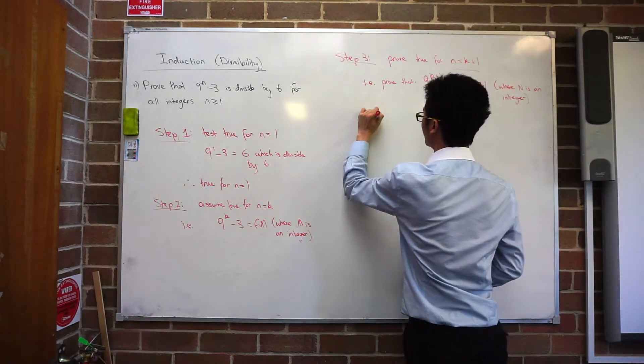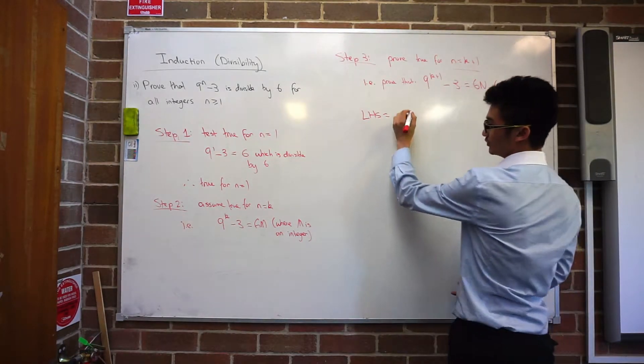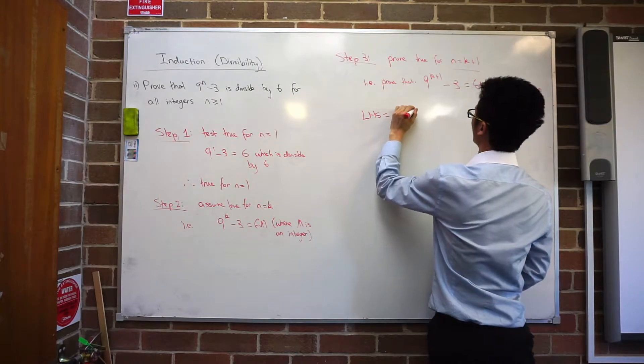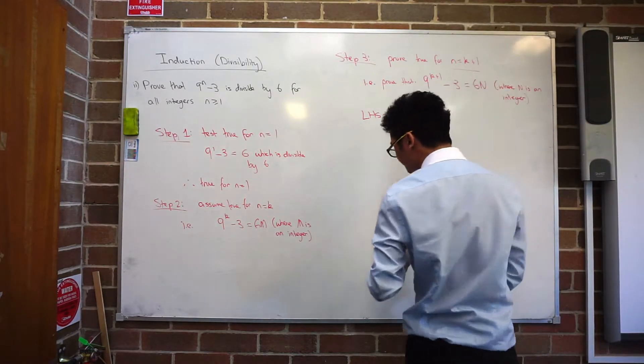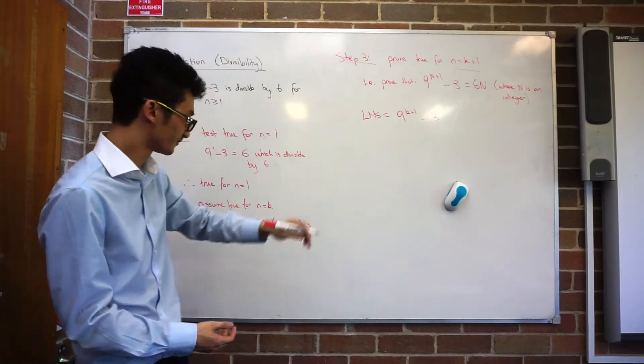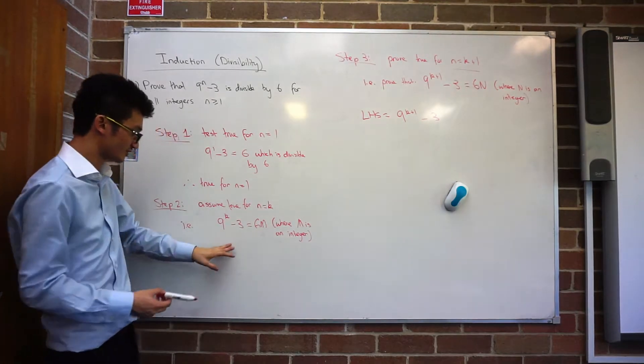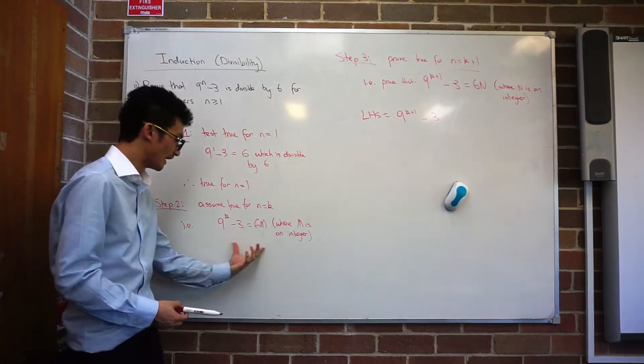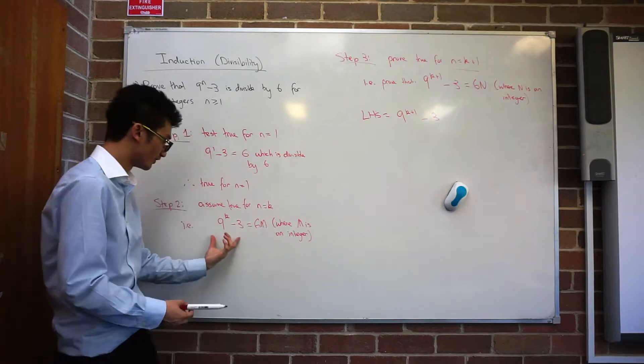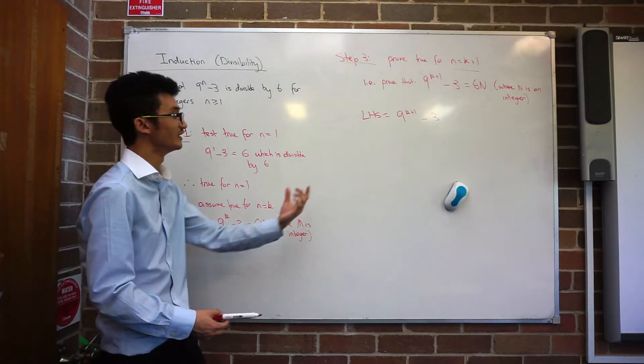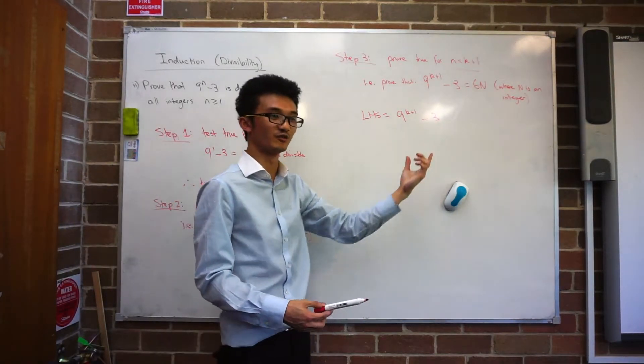And again, I'm always going to start with the left-hand side. So I put LHS is equal to 9 to the k plus 1 minus 3. Now before I keep going, remember how I said it was sometimes difficult when I have this statement here to try and find 9 to the k minus 3 inside this statement here. So what did I suggest we do?